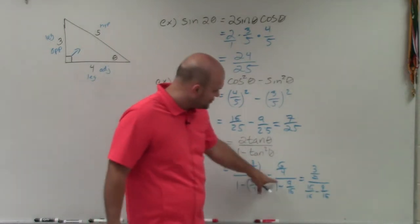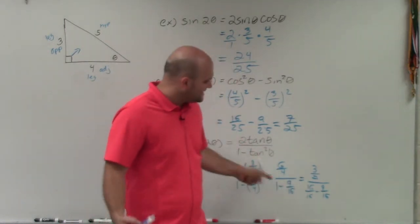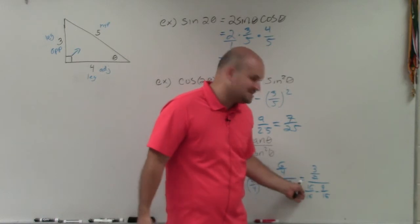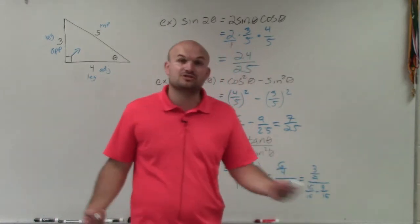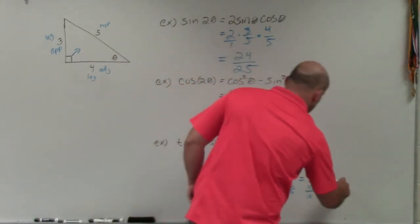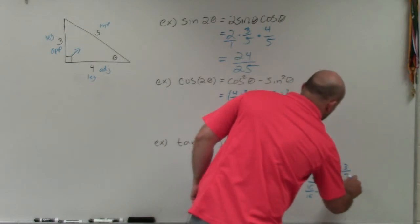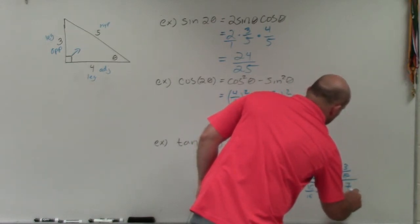So basically what I did is I just rewrote 1 as 16 over 16. I did that, so now I can subtract 16 over 16 minus 9 over 16, which is just going to give me 7 over 16. So therefore, I have 3 halves over 7 over 16.